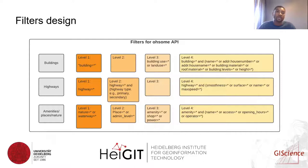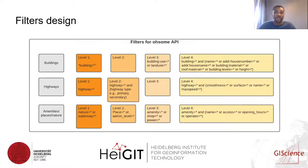We designed the classification schema grouping elements into three main mapping categories: buildings, highways, and amenities. We then designed several filters and boolean operations to be able to extract the different levels of local data.